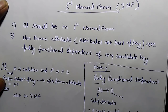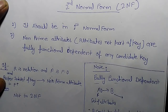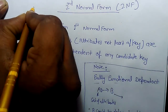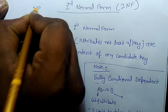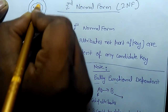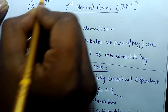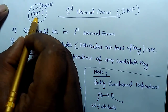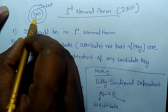Today we are going to learn Second Normal Form. A relation is in Second Normal Form if it is already in First Normal Form. You can convert a particular table into Second Normal Form only if it is already in First Normal Form.